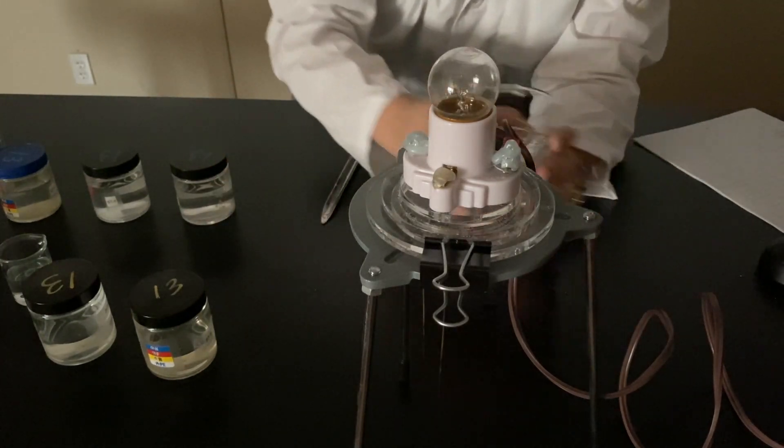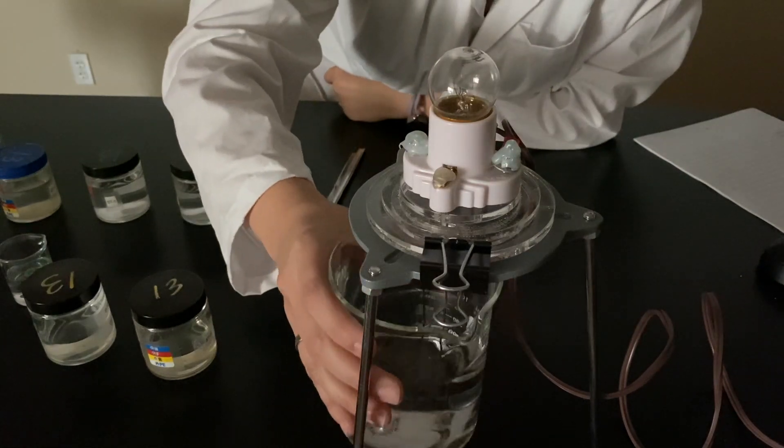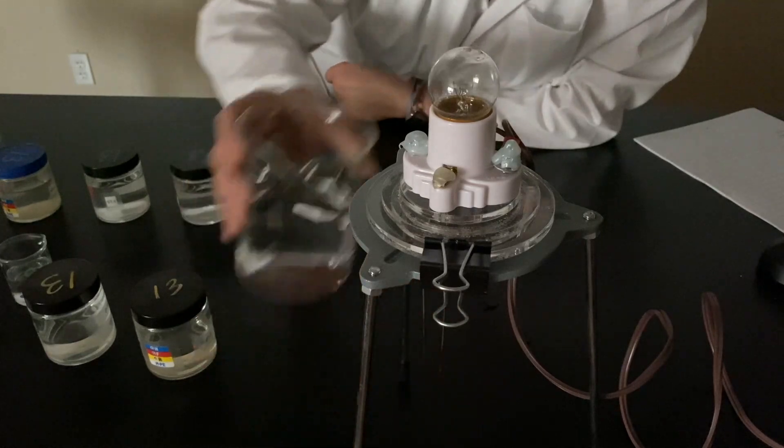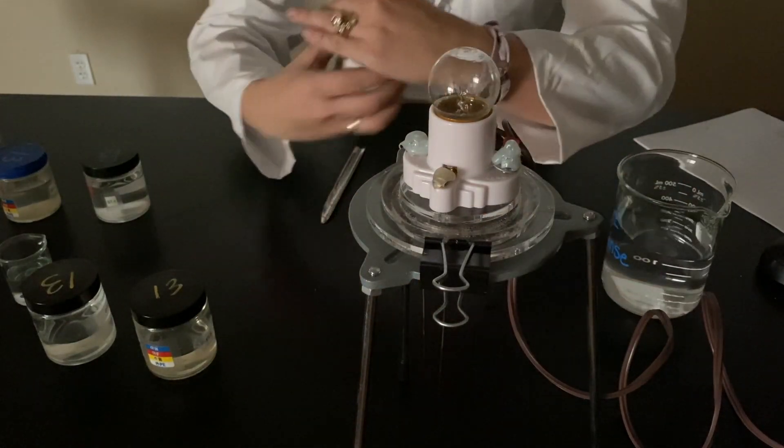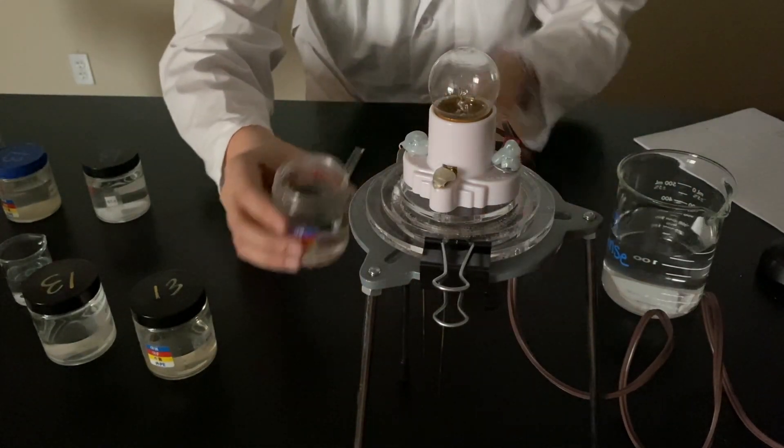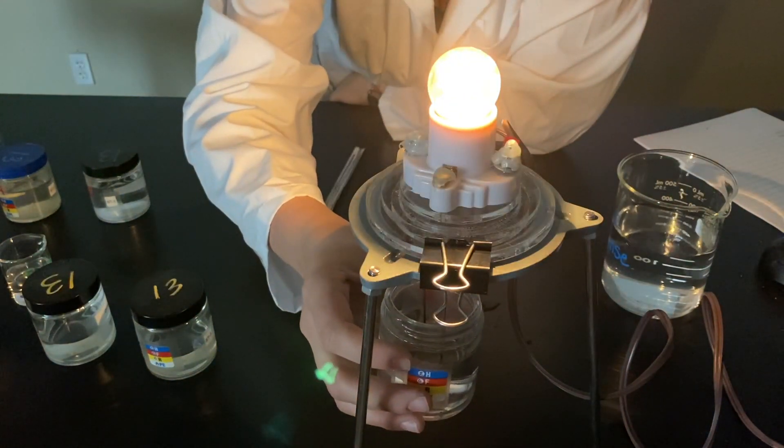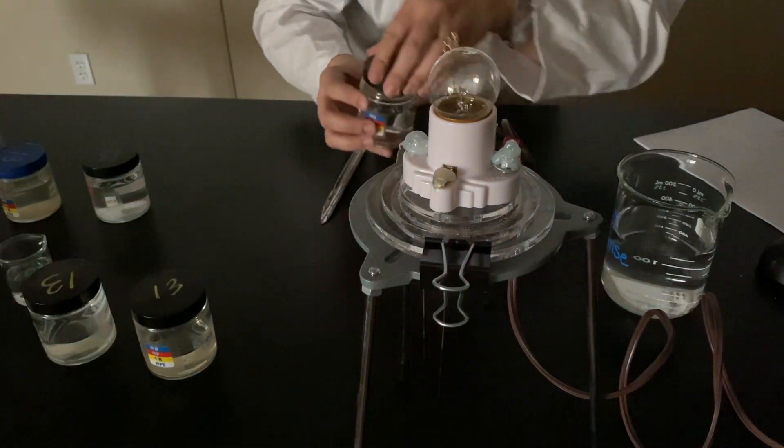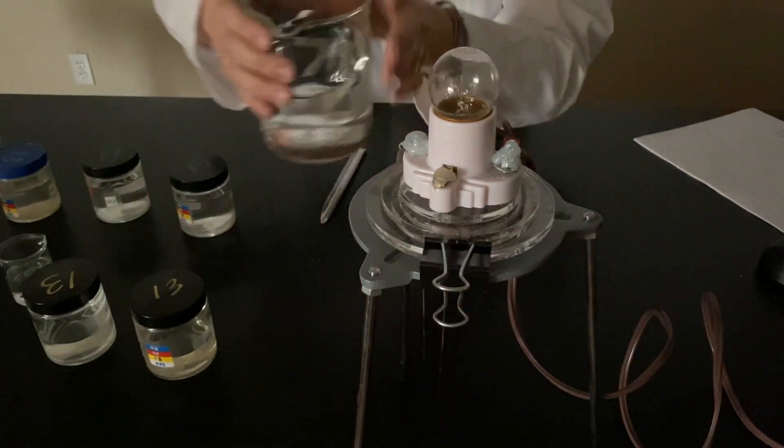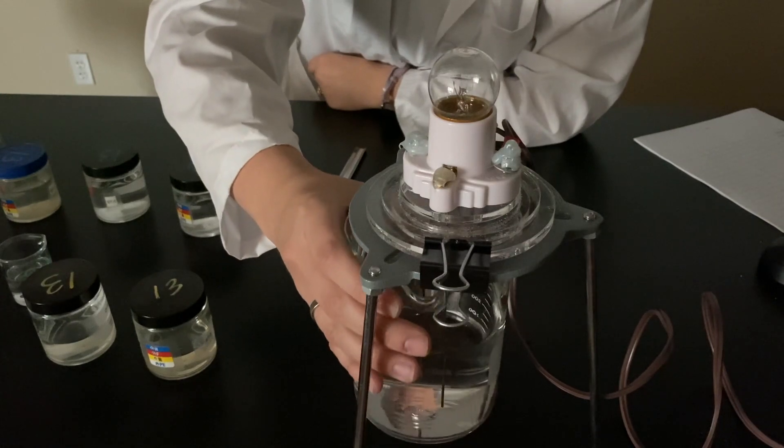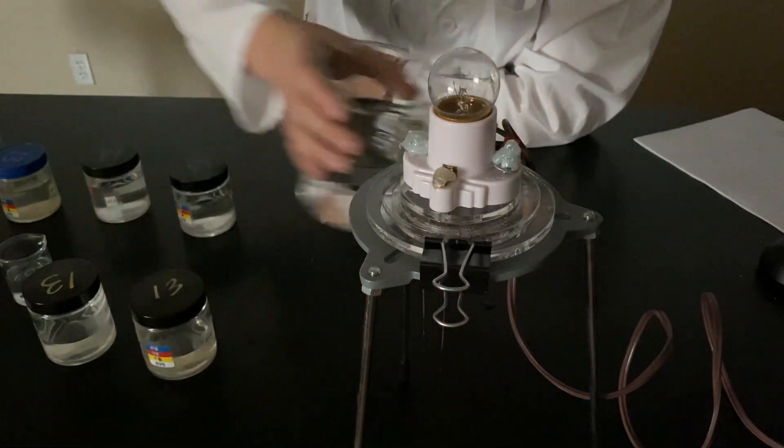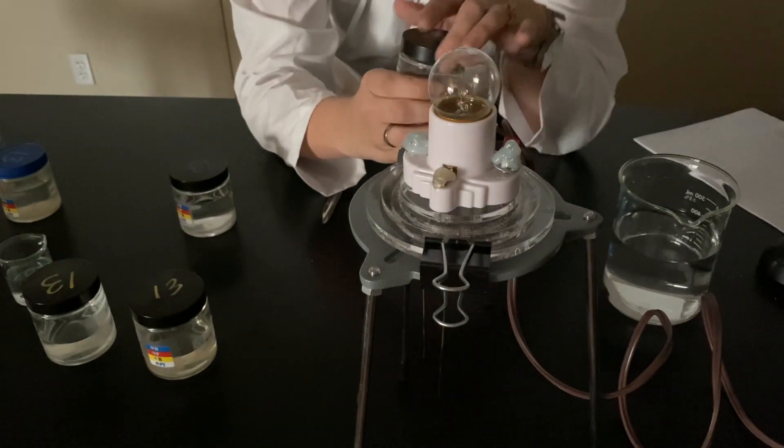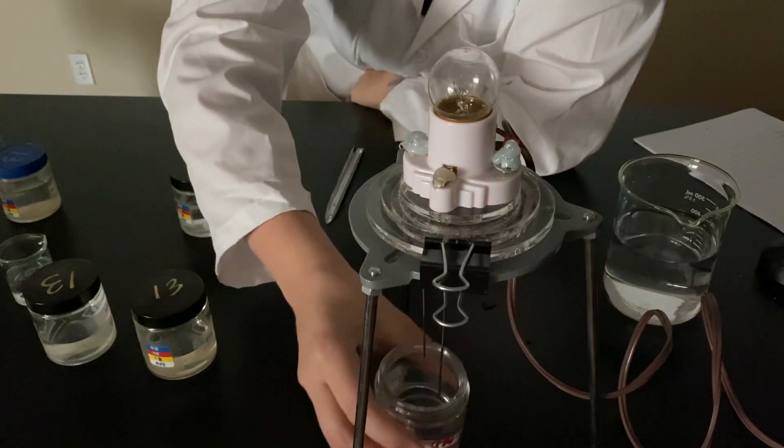What is next? 0.1 molar hydrochloric acid. But before I do that, I can't forget. Don't want to contaminate my experiment. So we'll do a DI rinse. There we go. 0.1 molar hydrochloric acid. And we rinse. And then, 0.1 molar nitric acid. HNO3.